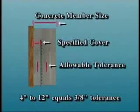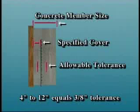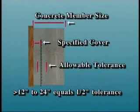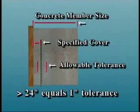Another factor that must be considered when an inspector is determining concrete surfaces and clear distance to formed and resulting concrete soffits is direction of tolerance. ACI 117 allows a tolerance of plus or minus 3/8 inch when the member size is over 4 inches but equal to or less than 12 inches, and plus or minus 1/2 inch when the member size is over 12 inches and equal to or less than 2 feet. This tolerance is increased to plus or minus 1 inch when the member size is over 2 feet.